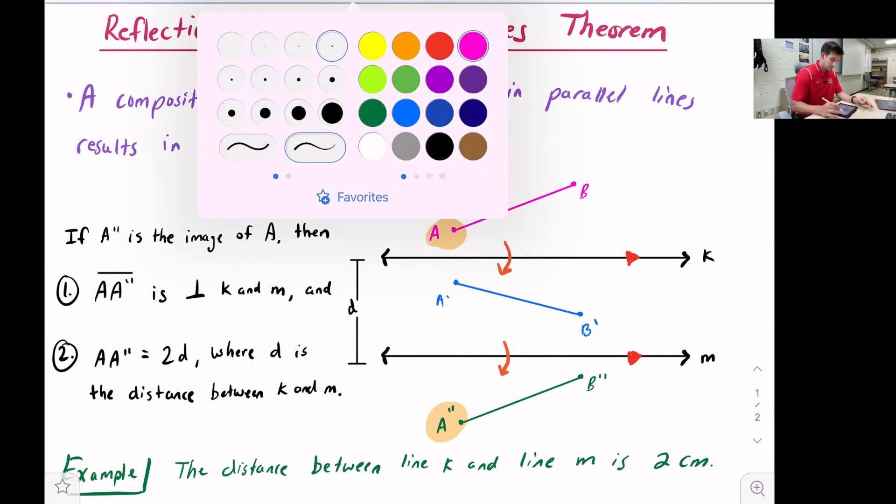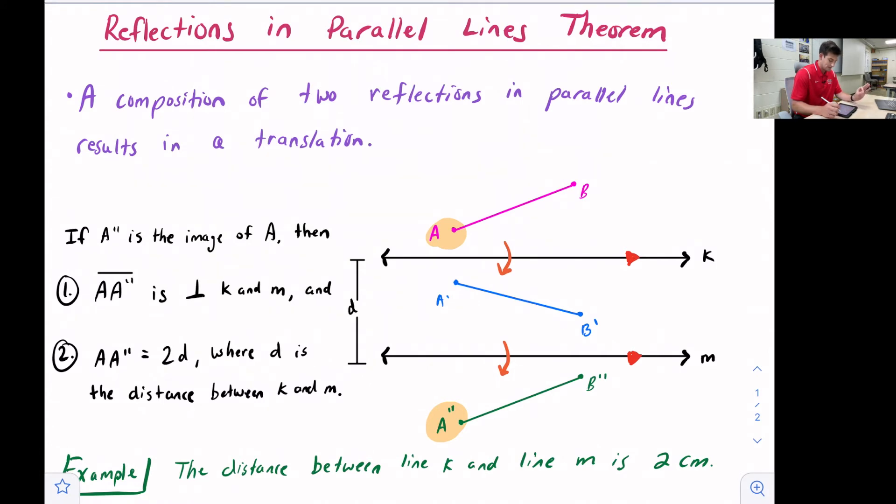So a couple things we've got: the line segment A to A double prime, that segment right there is perpendicular to both lines k and to line m.